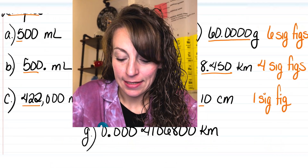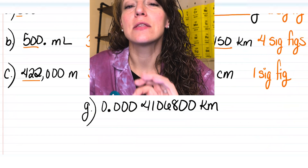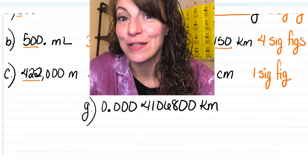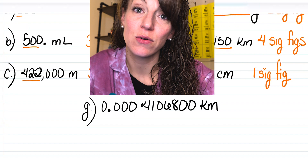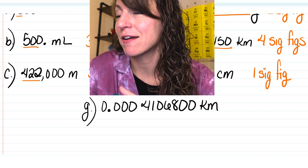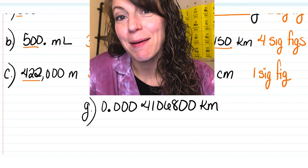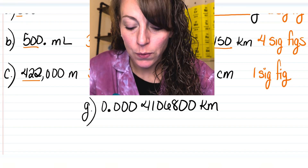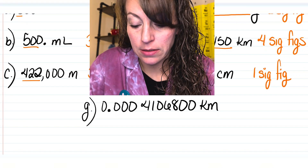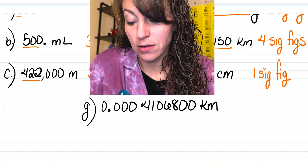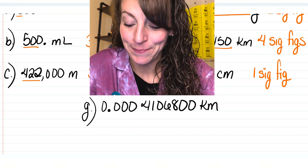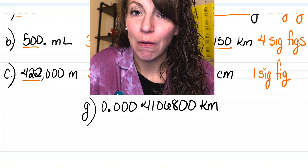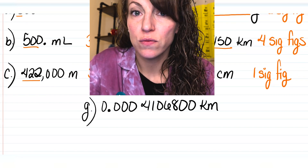We're going to take a look at letter G. Letter G is a little bit tricky, because we're adding in the two other types of zeros you can have. If you watched the previous videos, we talked about leading zeros, which are zeros in front of nonzero digits and are never significant, and trapped zeros, which are zeros that appear between nonzero digits and are always significant. In letter G, we have 0.0004106800 kilometers. These leading zeros out in front of the four are never significant — they're only holding a decimal place — so we're going to ignore those first four zeros.